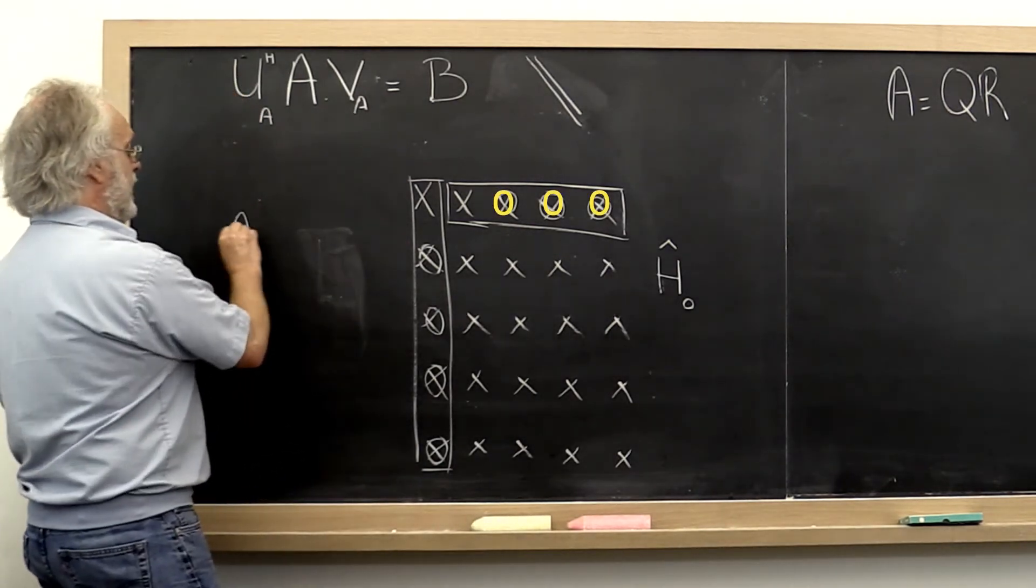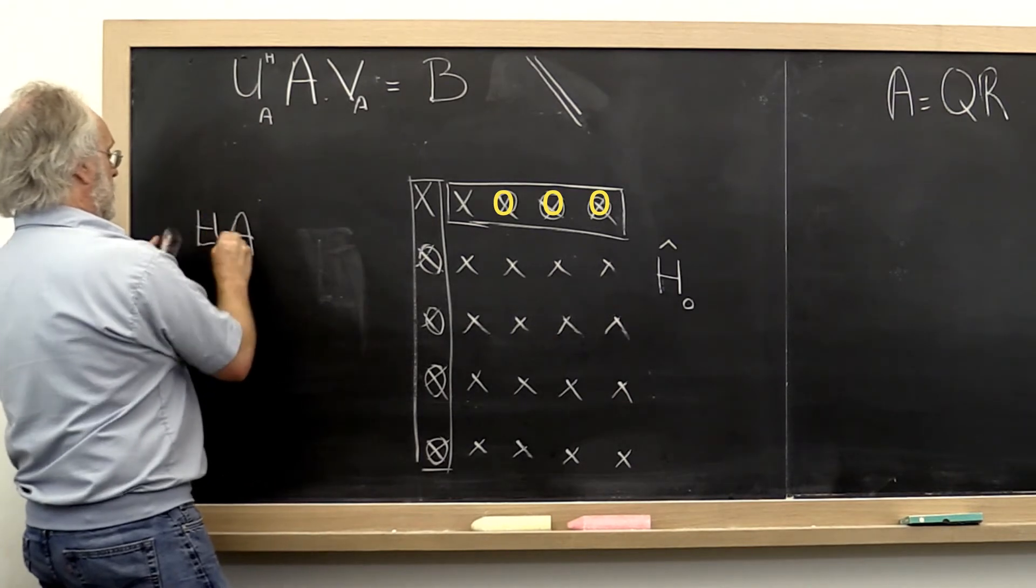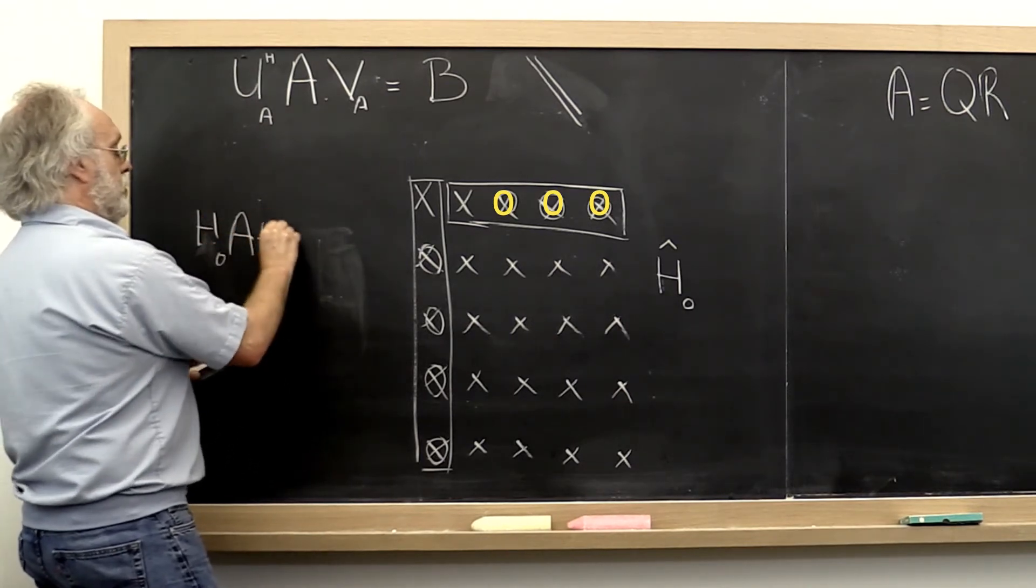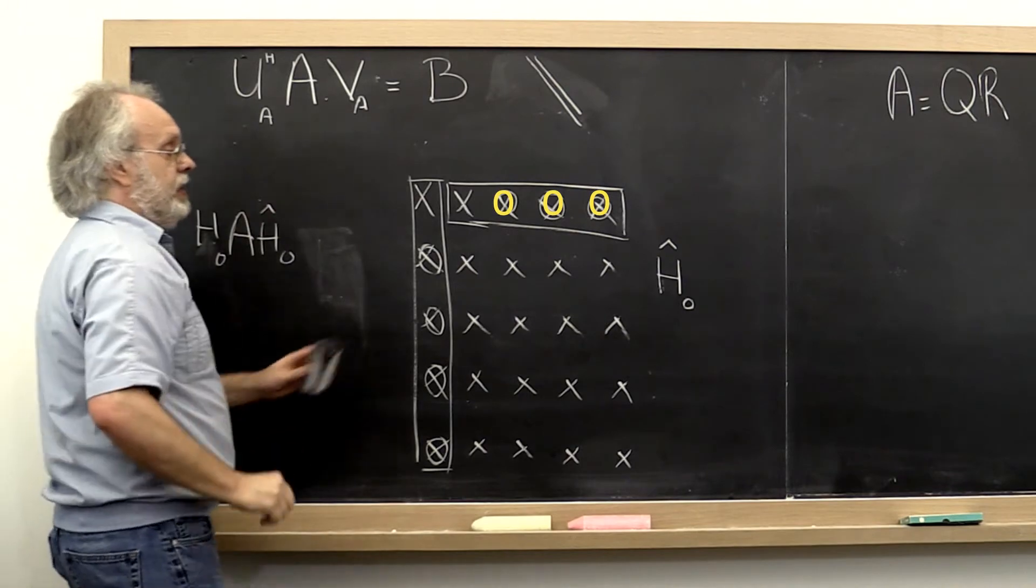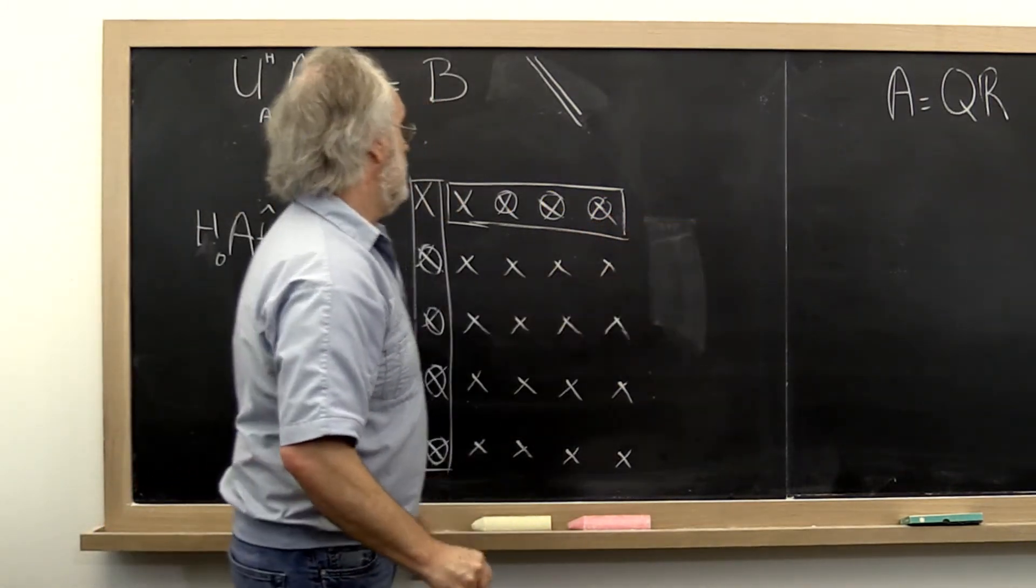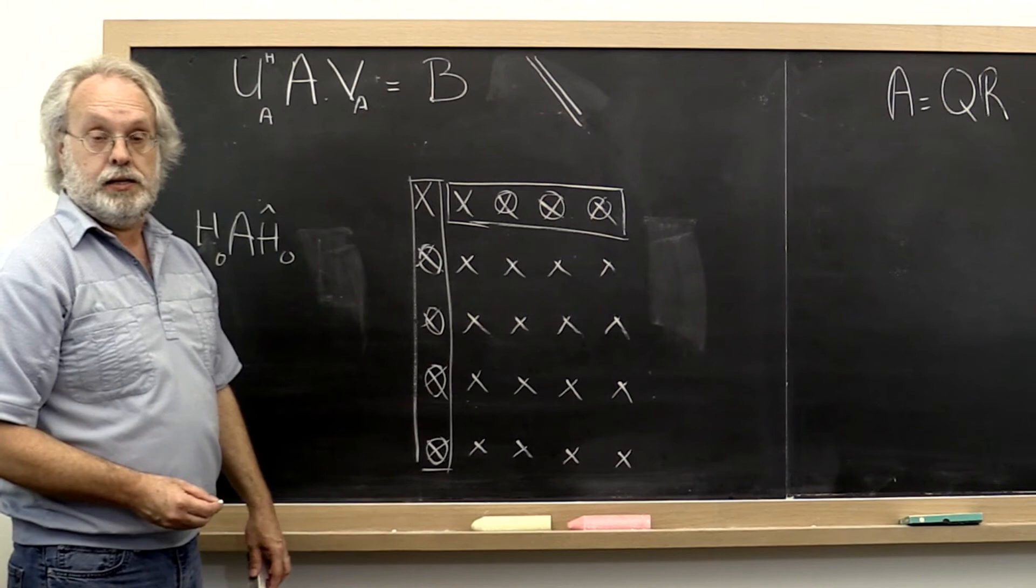So really what we have is we started with A, we computed H0, we computed H0 hat, and now we get this matrix right here.